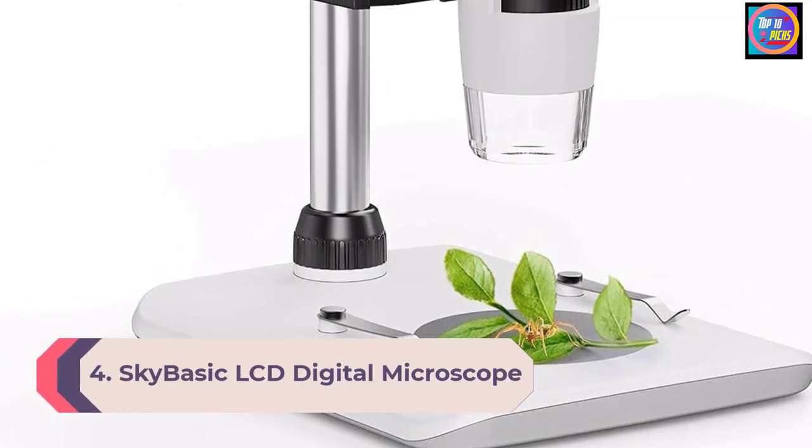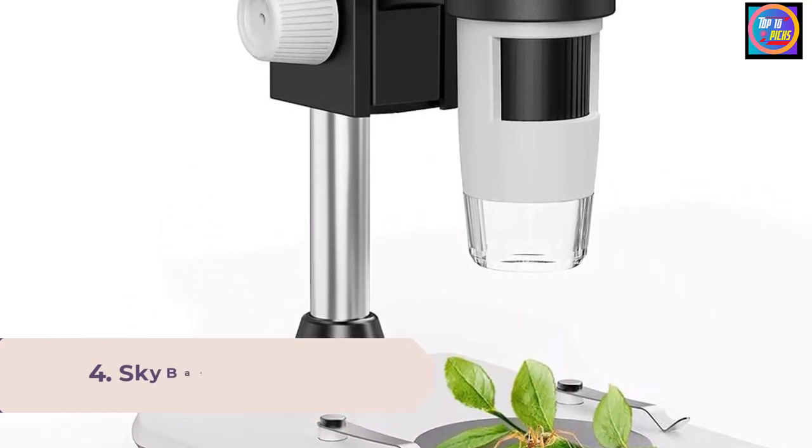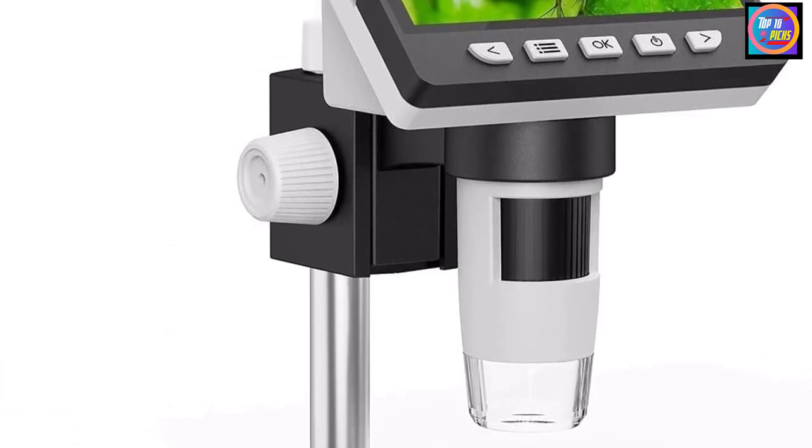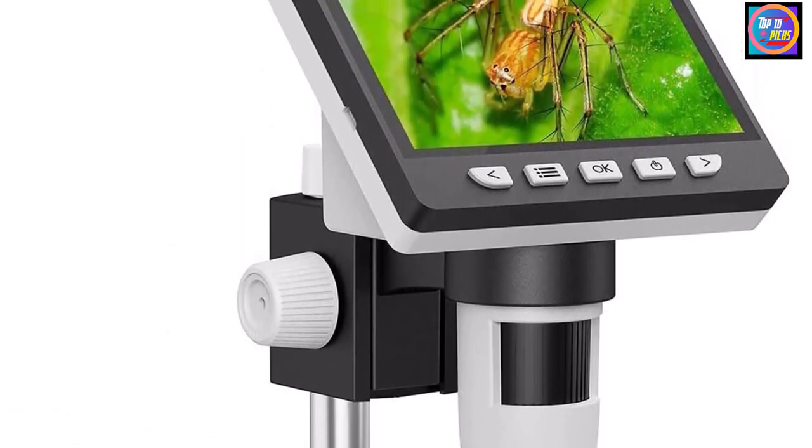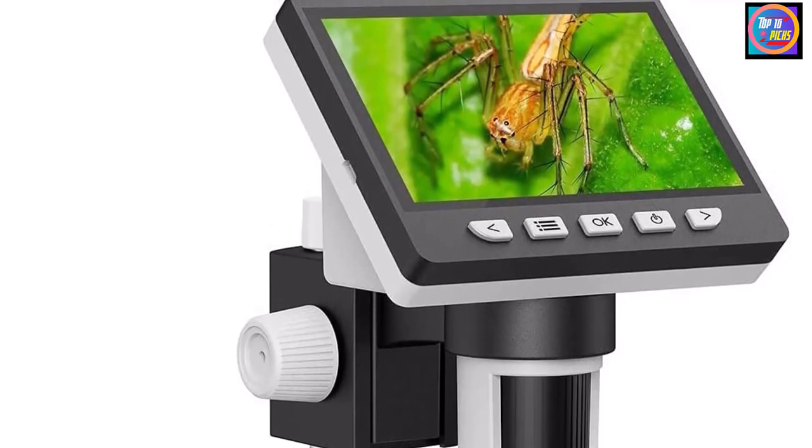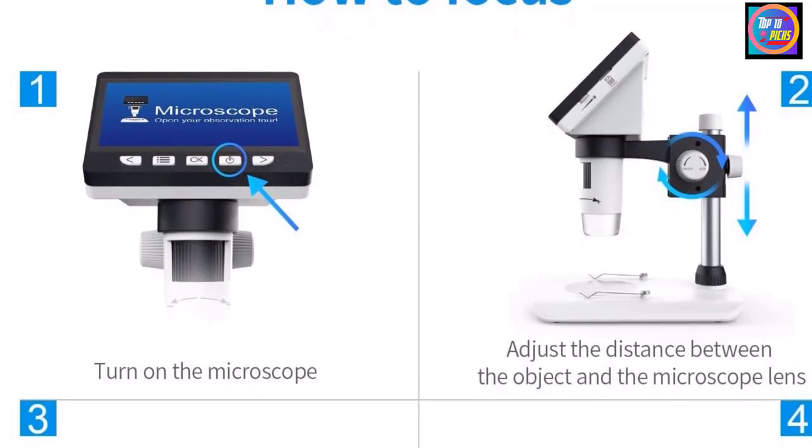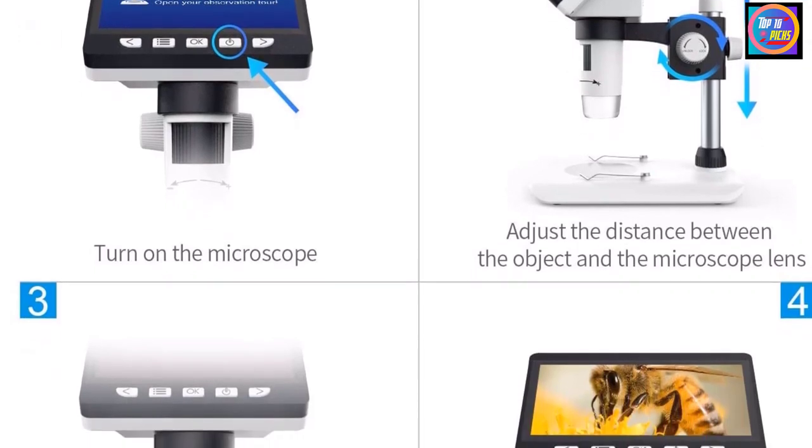Number 4. SkyBasic LCD Digital Microscope. Discover details from 50-1000x magnification to observe minute details in everything, including cells. The added benefit of a high-quality camera enables you to witness microscopic details without squinting your eyes. This is one of the best microscopes to use in low-lit areas as it's equipped with 8 built-in LEDs so you can adjust the brightness to your desired level of illumination.